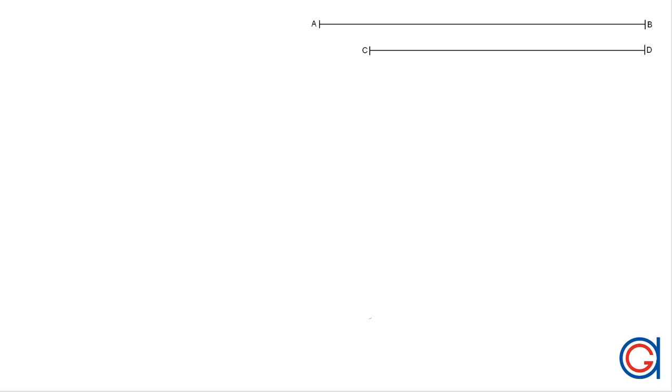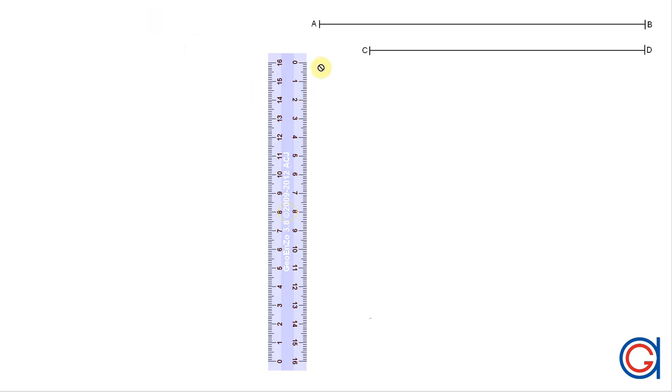Hello, we are going to draw an ovoid given its minor and major axis CD and AB.